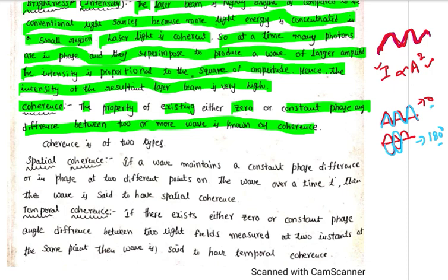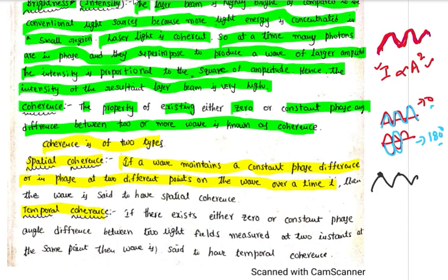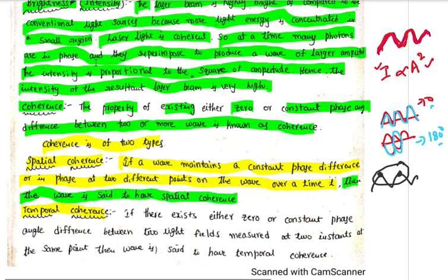Coherence is of two types: spatial coherence and temporal coherence. Spatial coherence means maintaining a constant phase difference — being in phase at two different points on the wave at the same time.